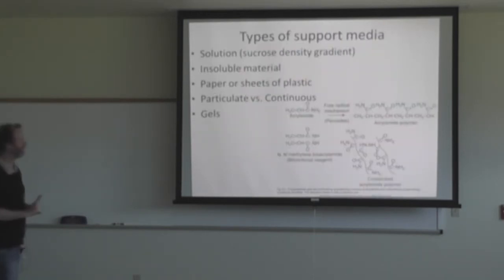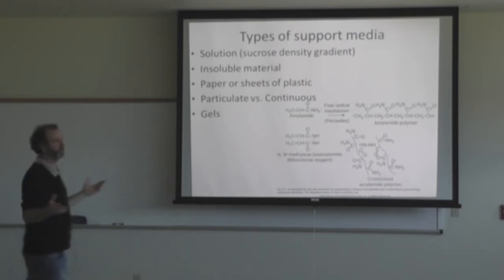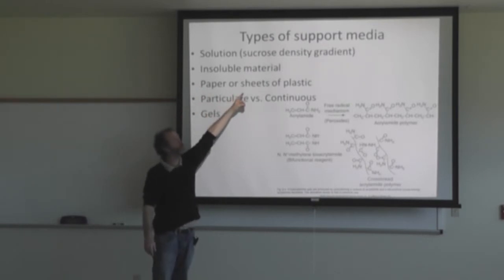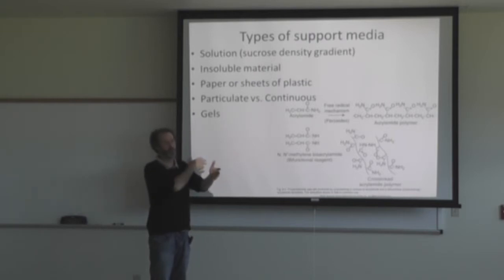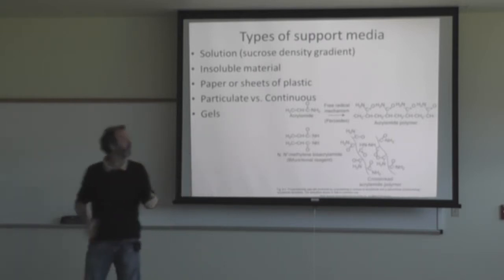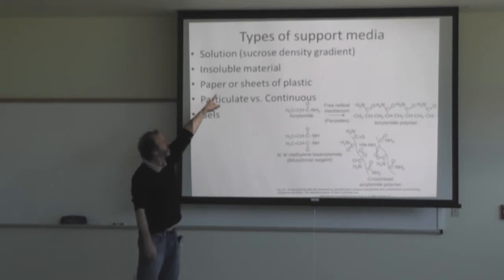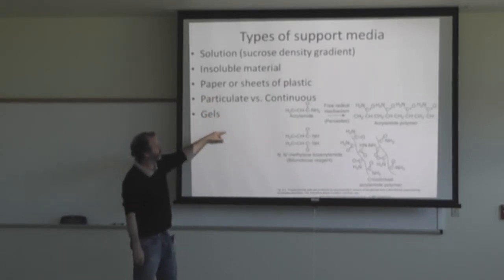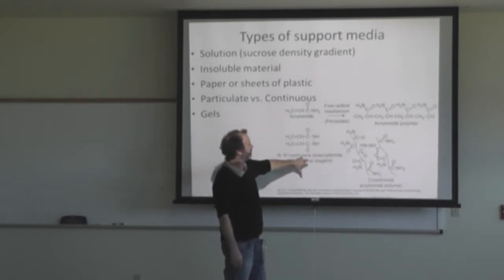Types of support media. There are all kinds of different support media for electrophoresis. We can have some kind of solution such as a sucrose density gradient, insoluble material like papers or sheets of plastic, or particulate versus continuous gels. This is an example of how you make polyacrylamide gels — you take acrylamide mixed with bis-acrylamide.